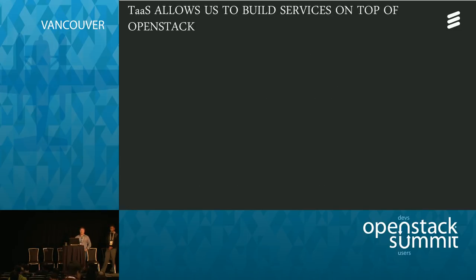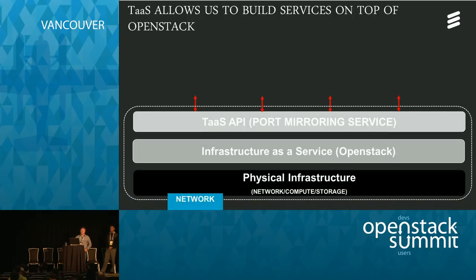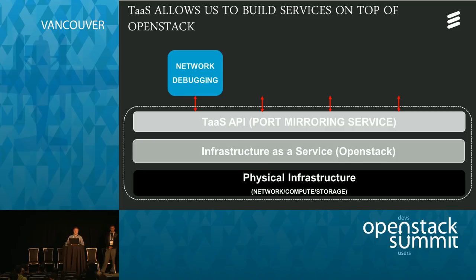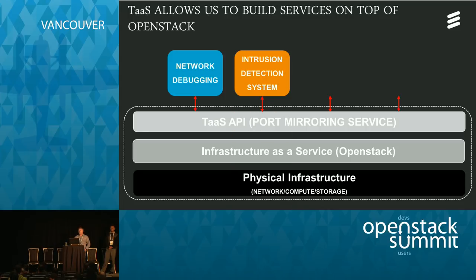A common question we received in Paris was: why do we need TAS, and what services does it support? The first obvious use case is typical network debugging. When vendors are instantiating VMs or using Neutron, they need network debugging capabilities for specific services. For example, you might have an Apache server dropping packets — is it a NIC issue or an application issue? The way to correlate these events is to run a tool like Wireshark.